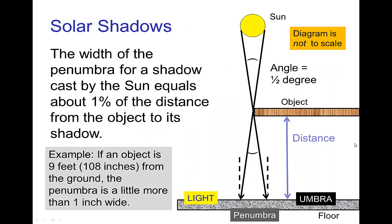If you want to estimate the size of a penumbra, you can make use of the fact that the sun makes an angle of about a half a degree in the sky. With a little geometry, you discover that this means the width of a penumbra is going to be about one percent of the distance between the object and its shadow.